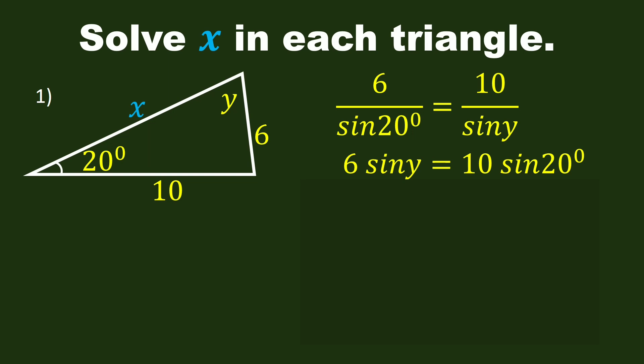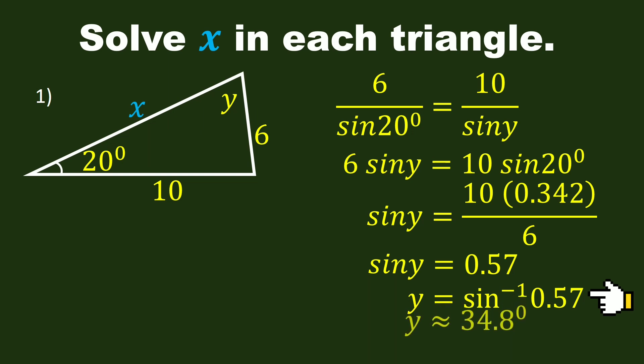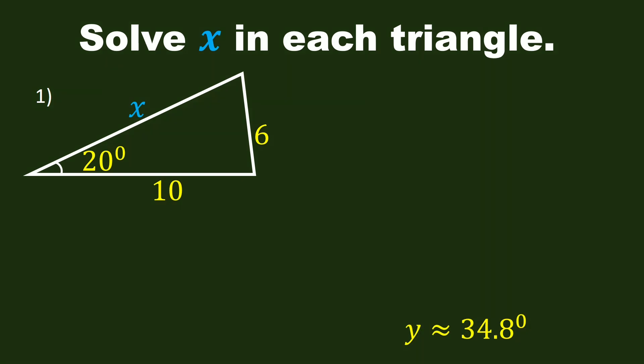Sine 20 degrees is 0.342 in scientific calculator. Divide both sides of the equation by 6, and we have this equation. Sine Y is equal to 10 times 0.342 divided by 6, and sine Y is equal to 0.57. Y is equal to inverse sine 0.57. Y is approximately 34.8 degrees. This is our second angle.